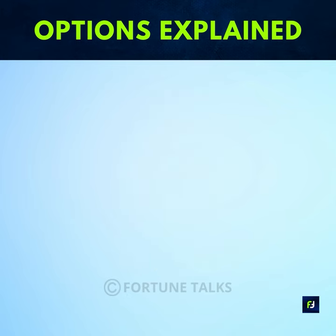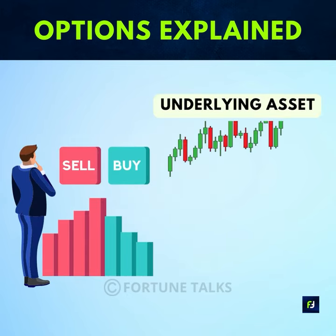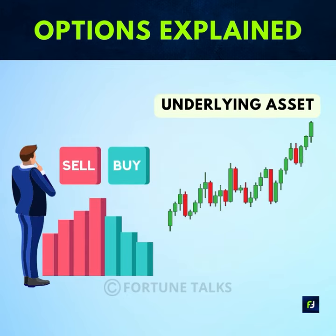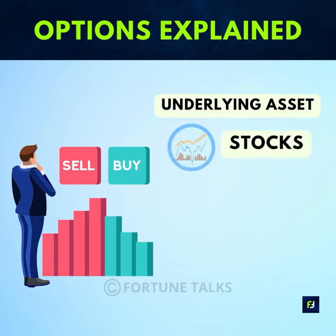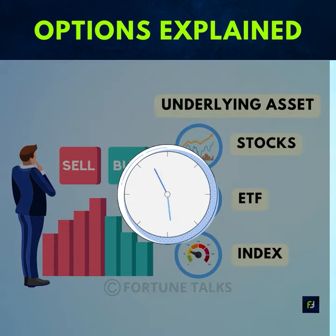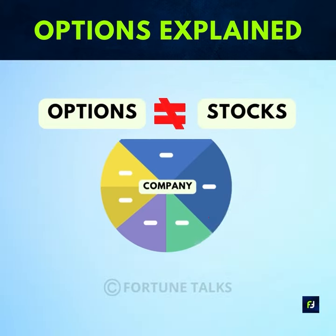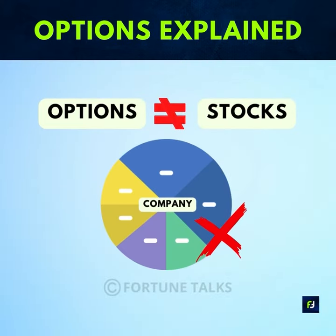An option is a contract that allows an investor or trader to buy or sell an underlying instrument like a stock, ETF, or even index at a predetermined price over a certain period of time. However, options are not the same thing as stocks because they do not represent ownership in a company.